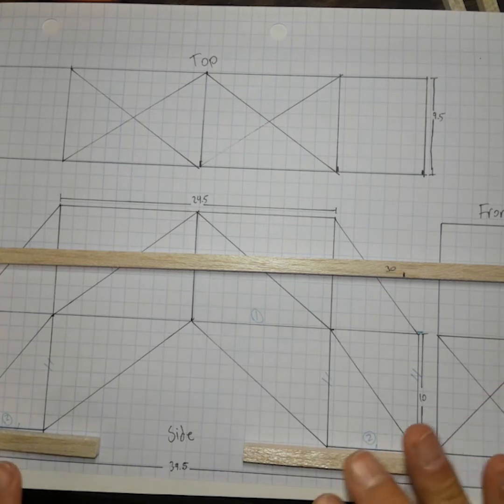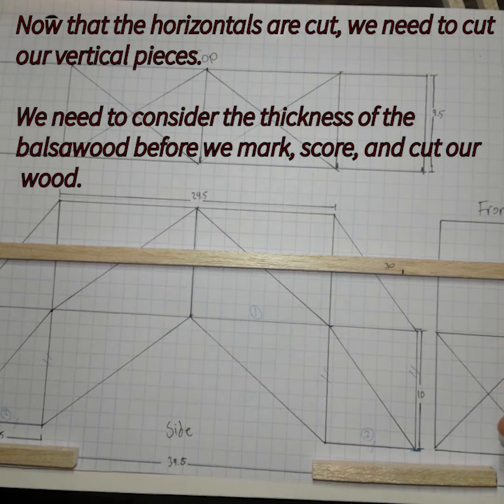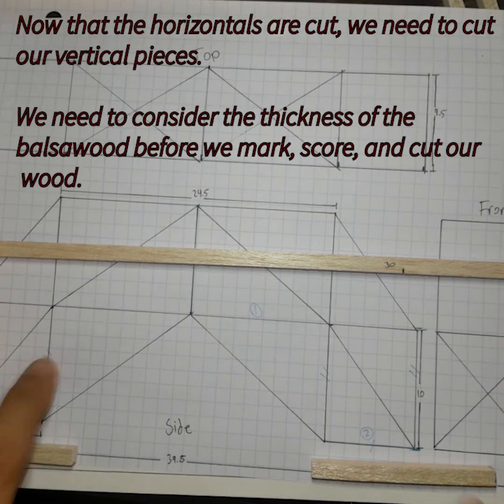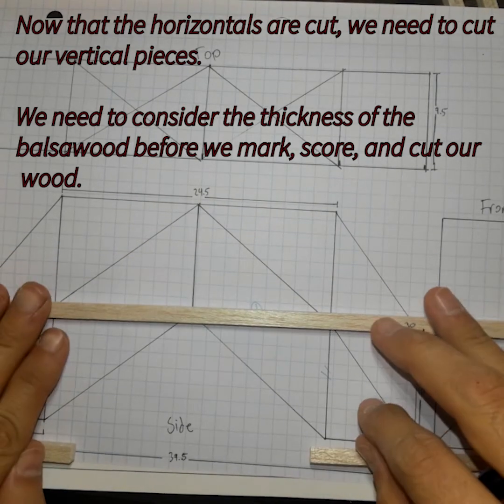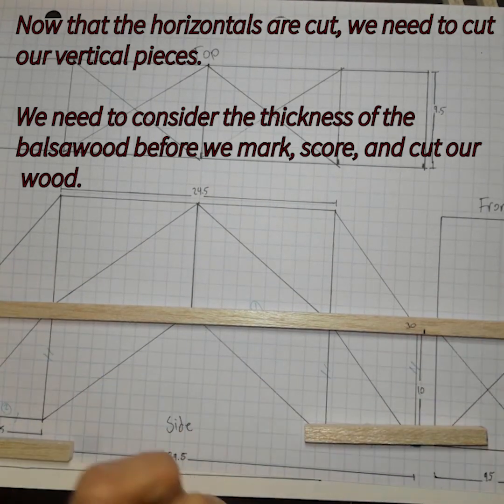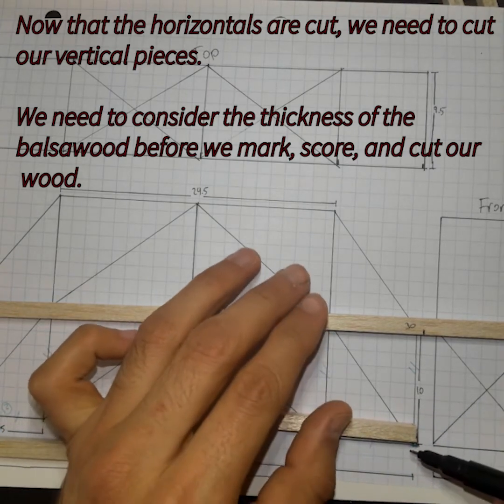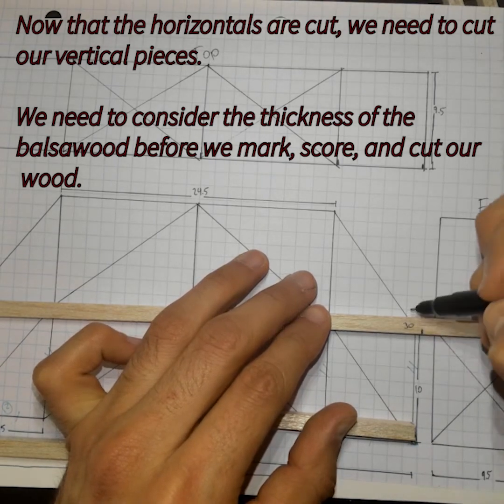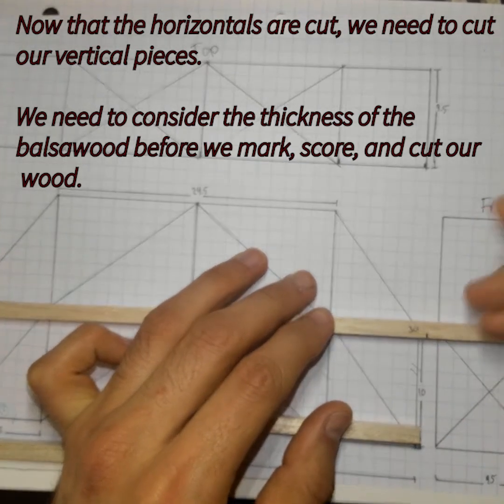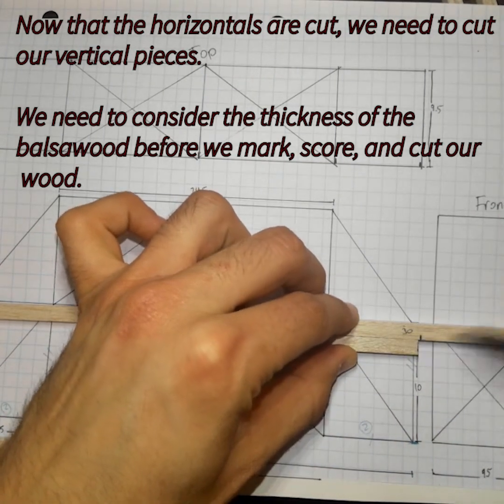So at this point, we have our two horizontal pieces cut for our bottom legs, and we have our long horizontal piece cut out as well. We're going to start cutting off our one, two, three, four vertical pieces that go in between these three components right here, alright. Keep in mind, I do want a distance of 10 centimeters between the bottom of this horizontal piece and the top of this horizontal piece, so now we need to take into account the width of both of these pieces combined.